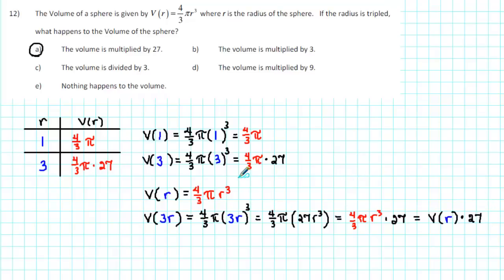So what happens when the radius is tripled? If the radius is tripled, then the original volume is multiplied by 27. So it doesn't matter whether we start off with the radius of 1 or 2 or 3 or whatever number. If we triple the radius, the volume is multiplied by 27.